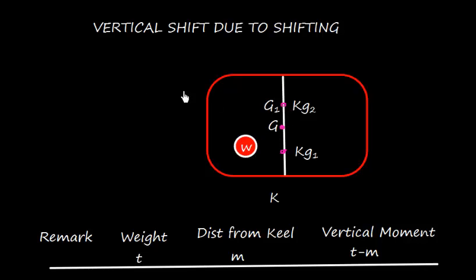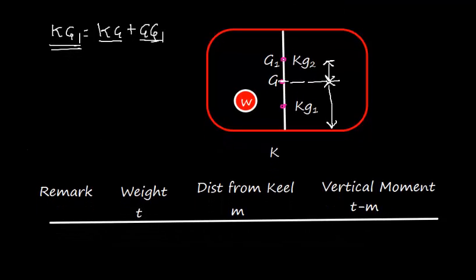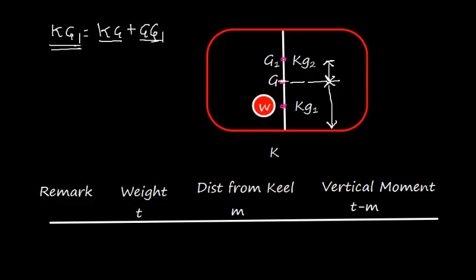If I shift something from this position to this position, the center of gravity of the vessel will also shift. We can see that KG1 will be KG plus GG1, where KG is the original distance and GG1 is the shift. This can be solved by considering that first I discharge this weight and then I load this weight — it is equivalent to a shifting operation.